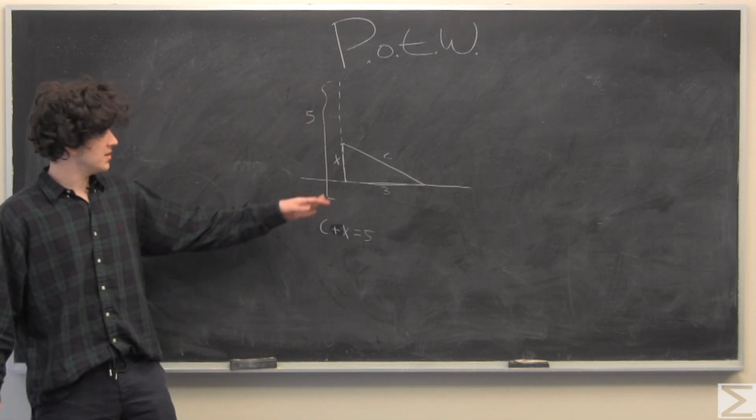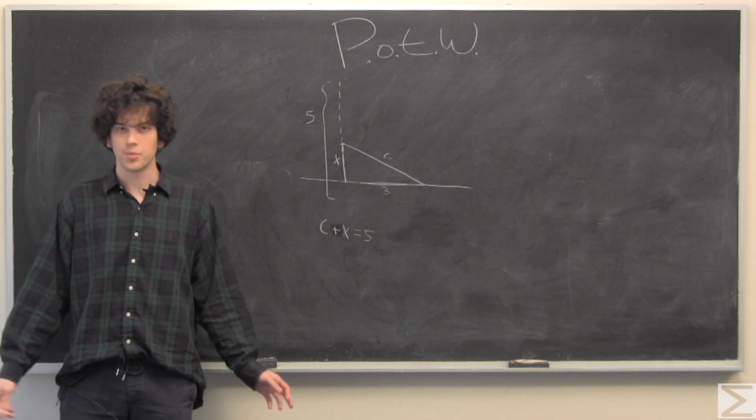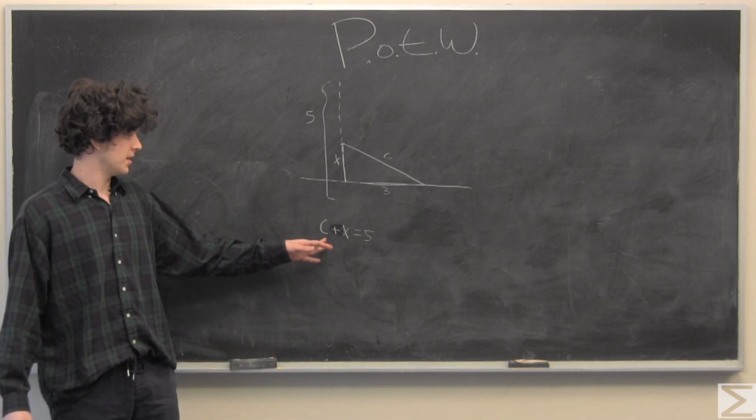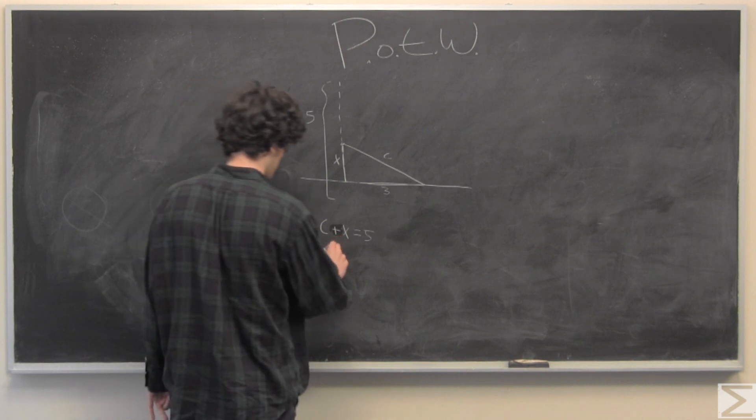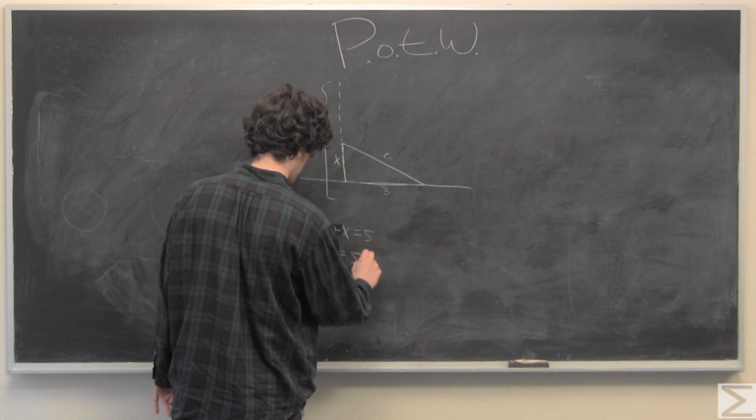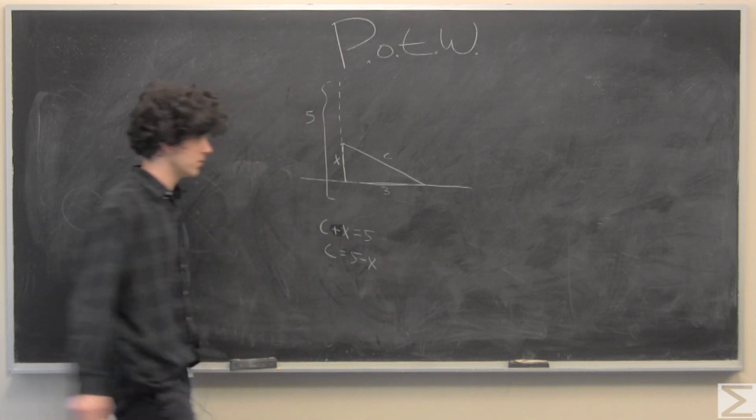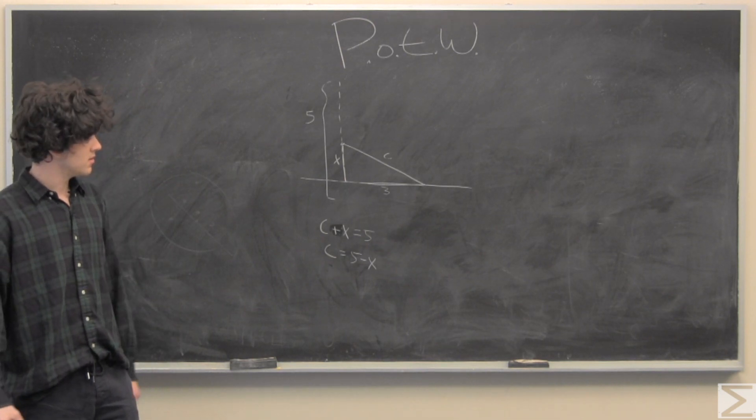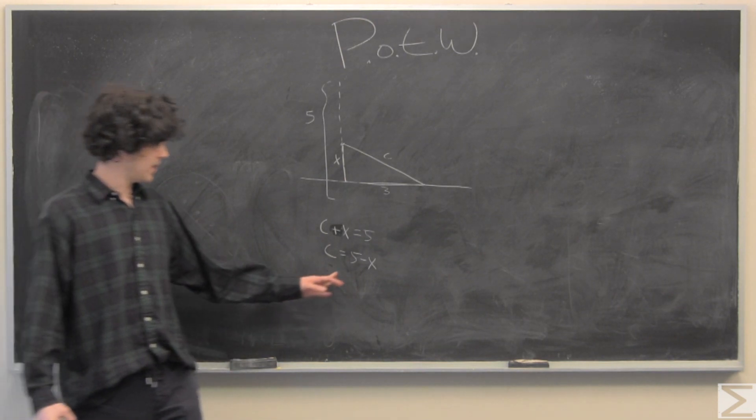And we also know that c and x make up the entire length of the pole, so we're putting c plus x equals 5, or c equals 5 minus x. So, now if we have c